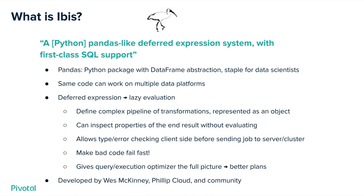In Python, the answer could be IBIS. IBIS is a package that, in its own description, is a pandas-like deferred expression system with first-class SQL support. Pandas is a Python package with a data frames abstraction — a staple for data scientists today — and IBIS mimics that. The same code can work on multiple platforms. The deferred expression system refers to lazy evaluation, meaning you can define complex pipelines of transformations represented as an object and inspect the properties of that without actually running the query. This allows for error checking or type checking on the client side before even sending the job to the cluster or server.